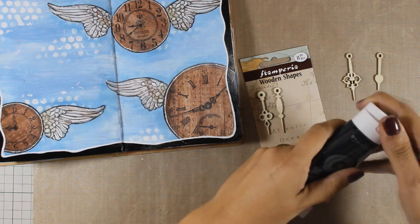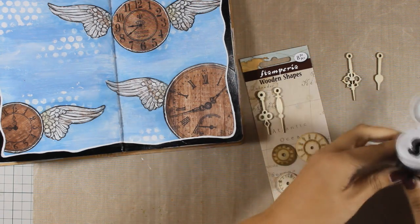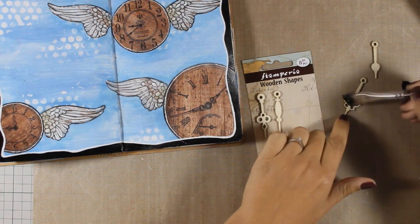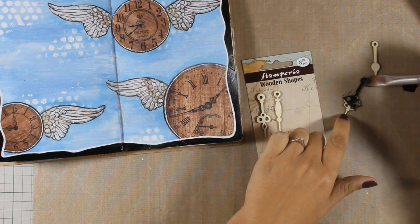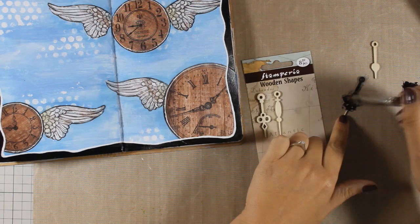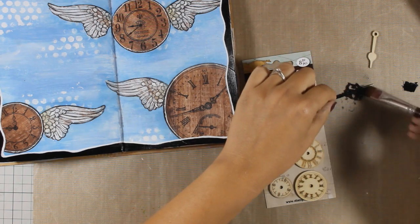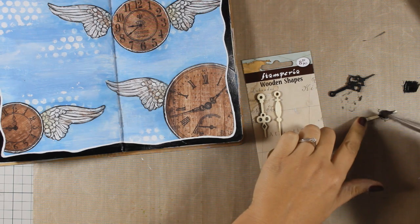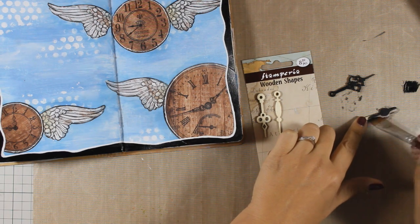These are wood veneer clock elements which are by Stamperia as well and I am going to color them with my black acrylic paint. I am going to add them on my page to embellish it and make it even more interesting and add a three-dimensional element.